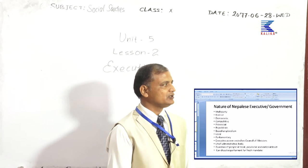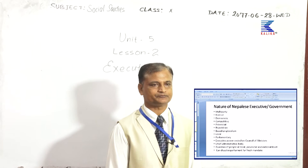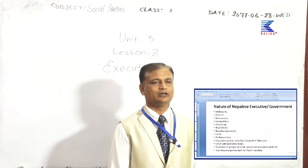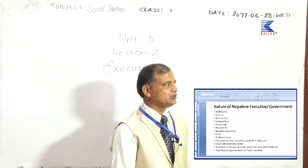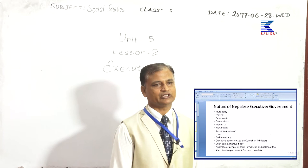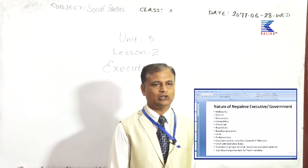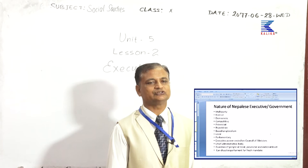It has another level that is local level of executive, and our executive is based on the parliamentary system. We have a multi-party democratic system where the national assembly is said to be the upper house and the house of representatives is said to be the lower house. Executive power is based on the council of ministers or cabinet. Cabinet exercises executive power — it is the chief administrative body and guardian of people at local, provincial, and federal level. It can dissolve the parliament if it needs to have a fresh mandate through election.